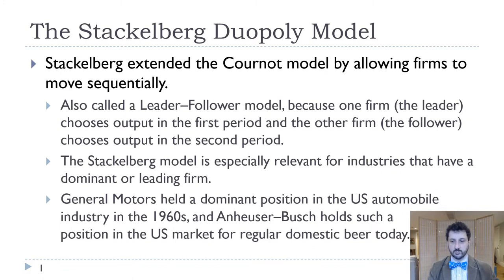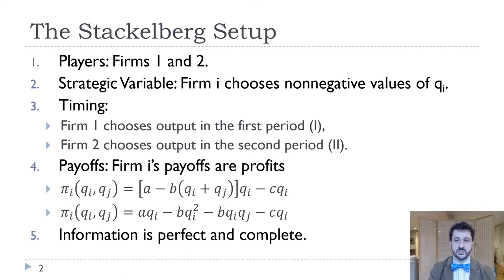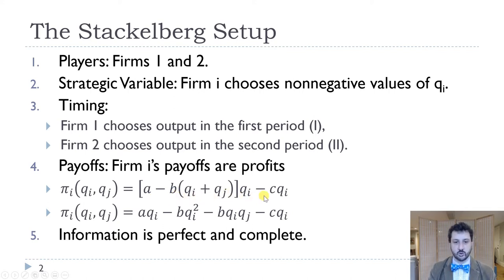Because it's a model with more than one period, we have to solve it backwards. We think of it not as a normal form game, but as a sequential game where firm one goes first, then firm two goes. We've got two firms choosing output just like Cournot — firm one in the first period, firm two in the second. Profits are the same as in Cournot: π = (A − B·Q)·Qi − C·Qi, expanding to A·Qi − B·Qi² − B·Qi·Qj − C·Qi. Information is perfect and complete — the only difference is timing.